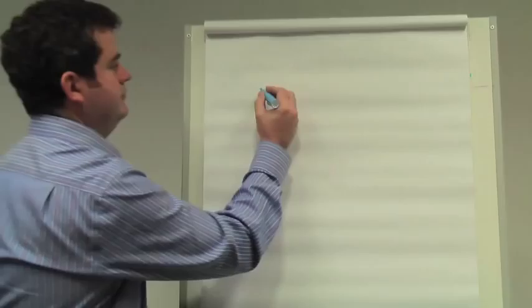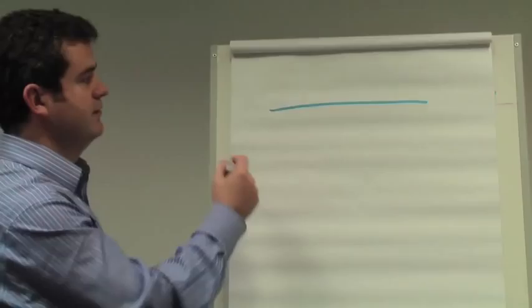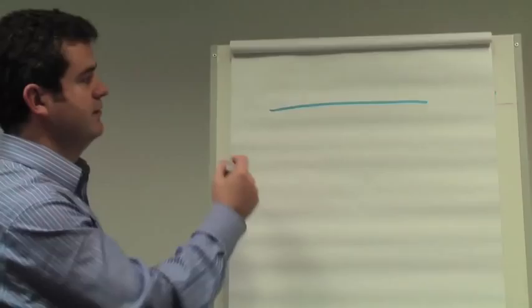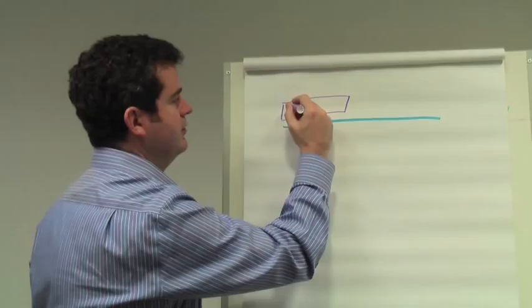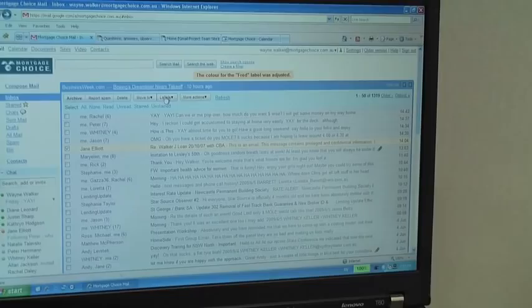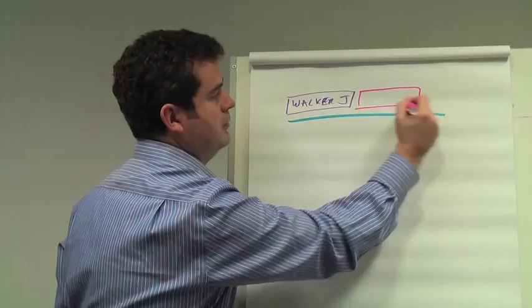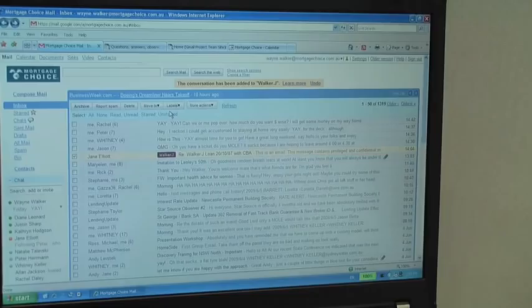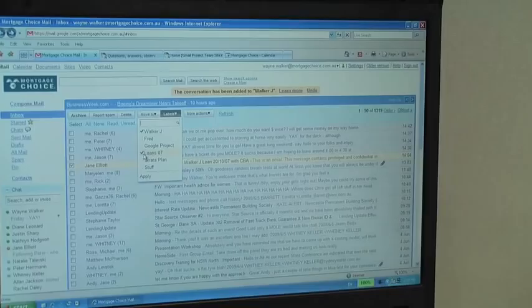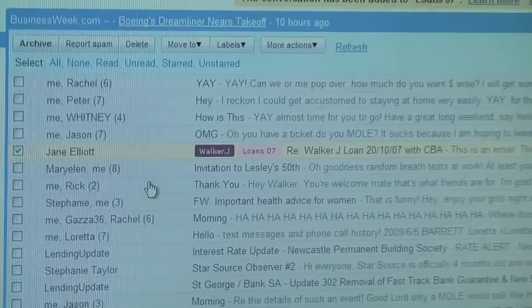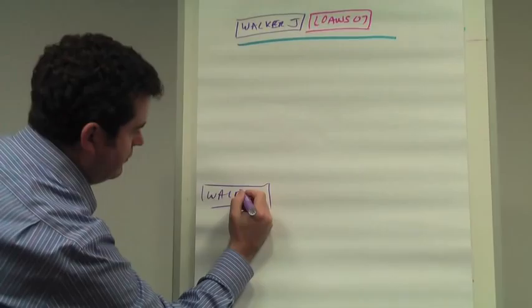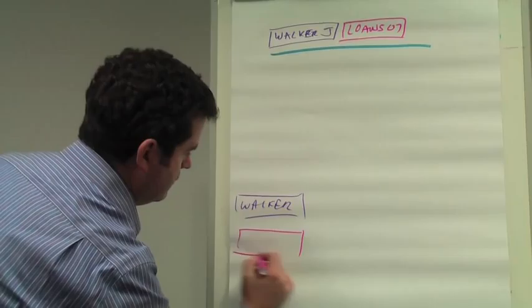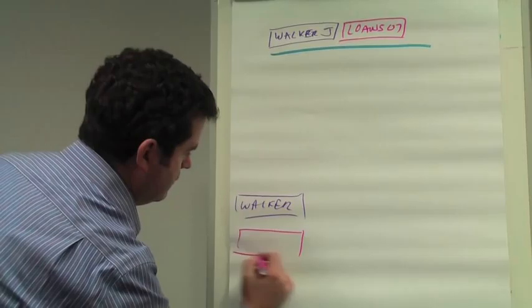Here's another example. We have a message or conversation from, and we want to give that a label pertaining to the client name. We might say this is Walker J. We might also give it a label Loans 07. Now down here in our Gmail inbox we'll have a label for Walker, we'll have a label for Loans 07.